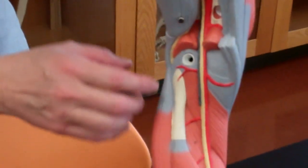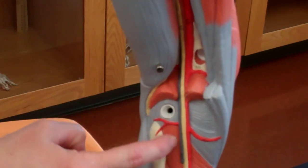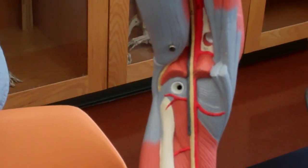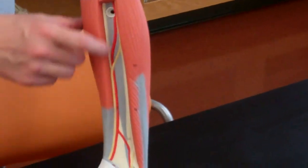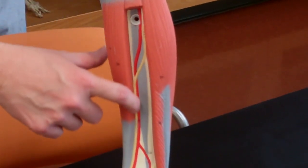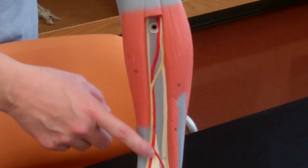We have the popliteal artery and the popliteal vein on the back behind the knee. And then we have the tibial artery running here right next to the tibia, shin bone. Think shin bone.